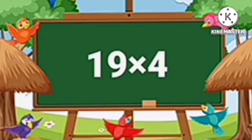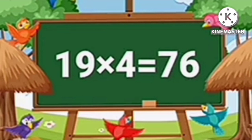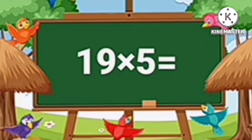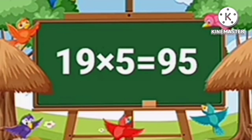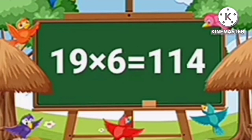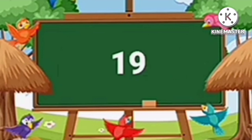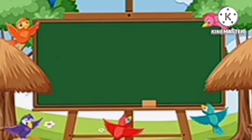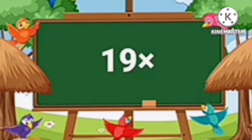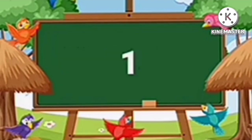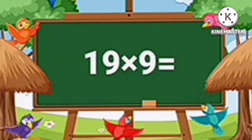Nineteen fours are seventy-six. Nineteen fives are ninety-five. Nineteen sixes are one hundred fourteen. Nineteen sevens are one hundred thirty-three. Nineteen eights are one hundred fifty-two. Nineteen nines...